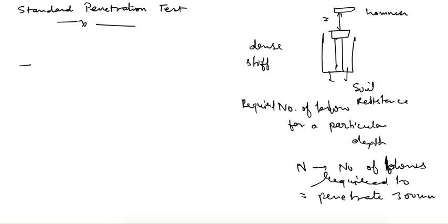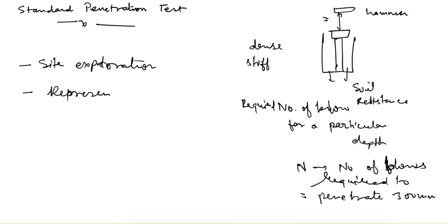This test is used first of all for site exploration — to find out what kind of soil exists at the required field site. Apart from that, we can obtain a representative sample from this test, so other parameters such as water content and unit weight can also be measured.